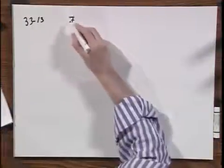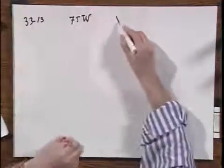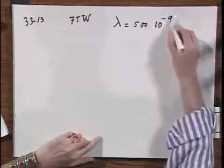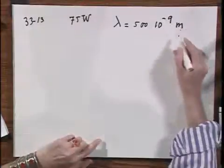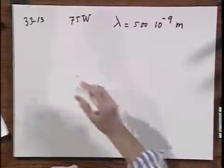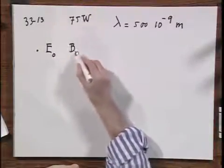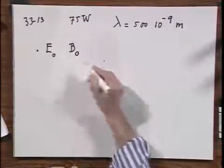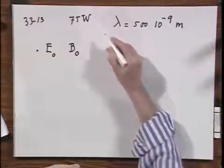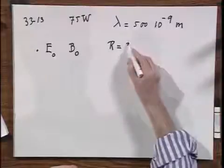We have monochromatic light, 75 watts, we have a wavelength which I believe has nothing to do with the problem, 500 nanometers, and it radiates uniformly in all directions. And the question now is, what is the associated E₀ and B₀, the amplitudes of the E vector and the B vector, if I am at a distance r from this light source of about 3 meters?